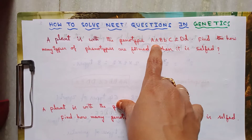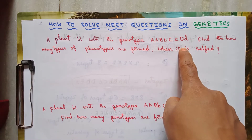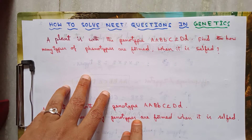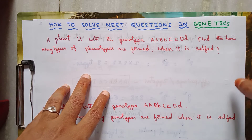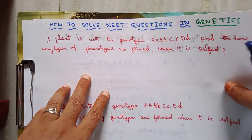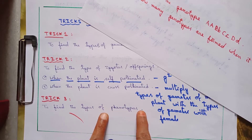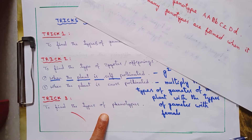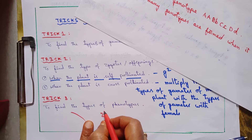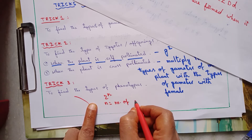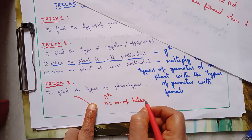The question is: a plant has the genotype AABBCCDD — capital A capital A, capital B small b, capital C small c, capital D small d. Find how many types of phenotypes are formed when it is selfed. Self means when this plant is self-pollinated. To find the types of phenotypes, we use the formula 2^n, where n equals the number of heterozygotes.